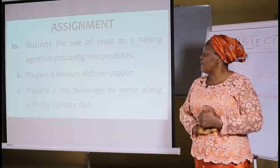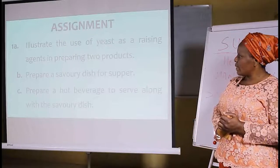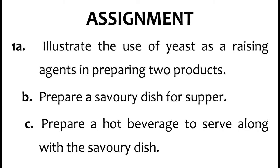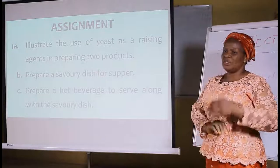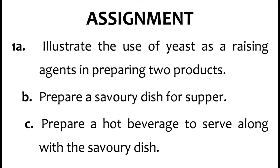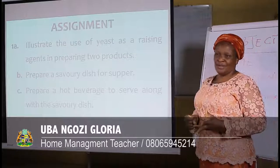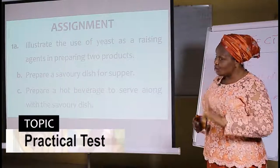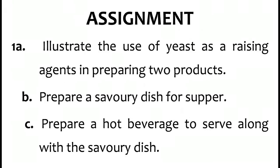I will leave you with an assignment to try what we have done today. 1A — Illustrate the use of yeast as a raising agent in preparing two yeast products. We defined yeast as a raising and leavening agent used in confectioneries and pastries. 1B — Prepare a savory dish for supper. A savory dish is not sweet but is highly flavored. 1C — Prepare a hot beverage to serve along with the savory dish.